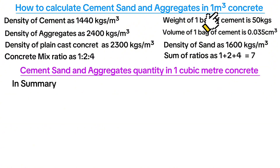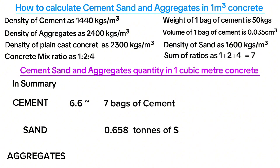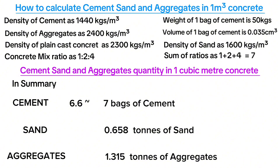In summary, for 1 cubic meter of concrete with a mix ratio of 1:2:4, you need 6.6 bags of cement — equivalent to 7 bags — 0.658 tons of sand, and 1.315 tons of aggregates. You can use the same procedures to work out quantities for other mix ratios. That's all about how to calculate cement, sand and aggregates quantity in 1 cubic meter.